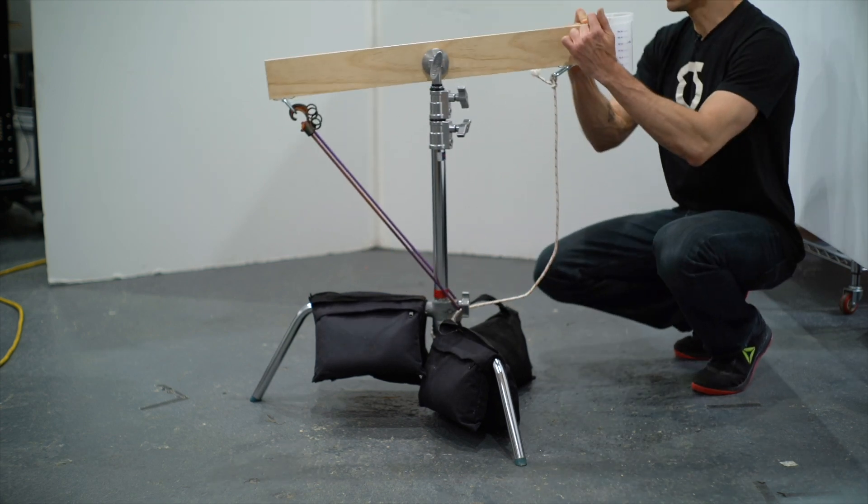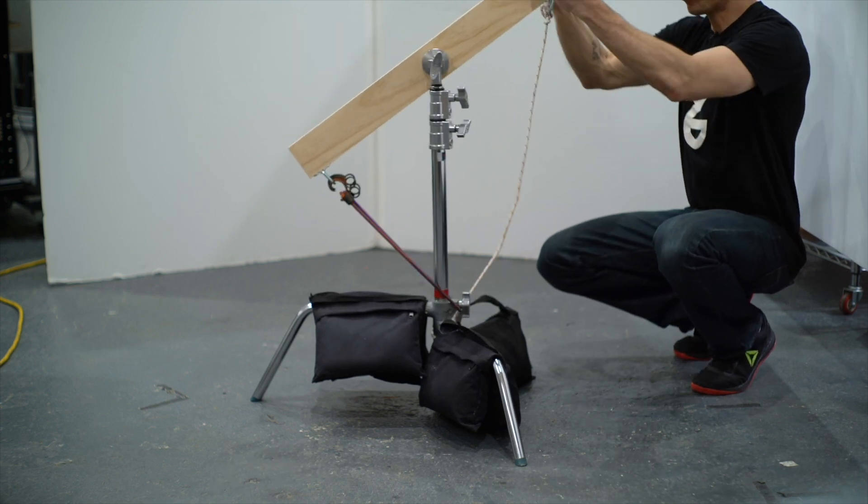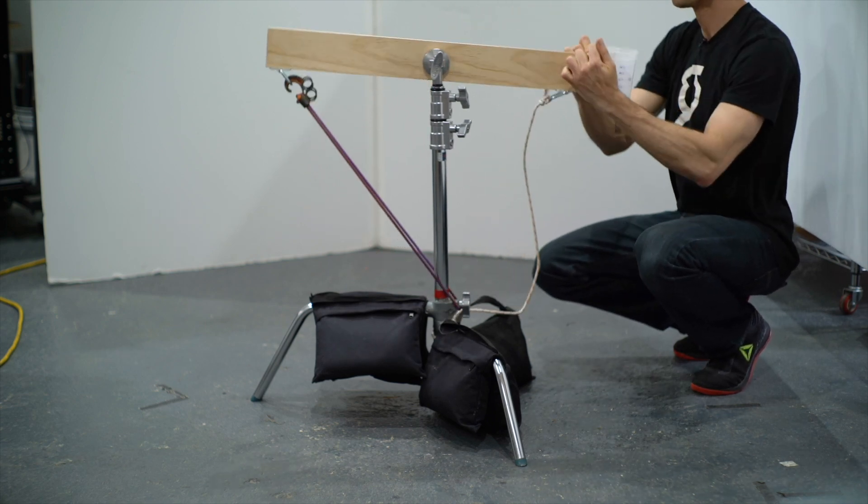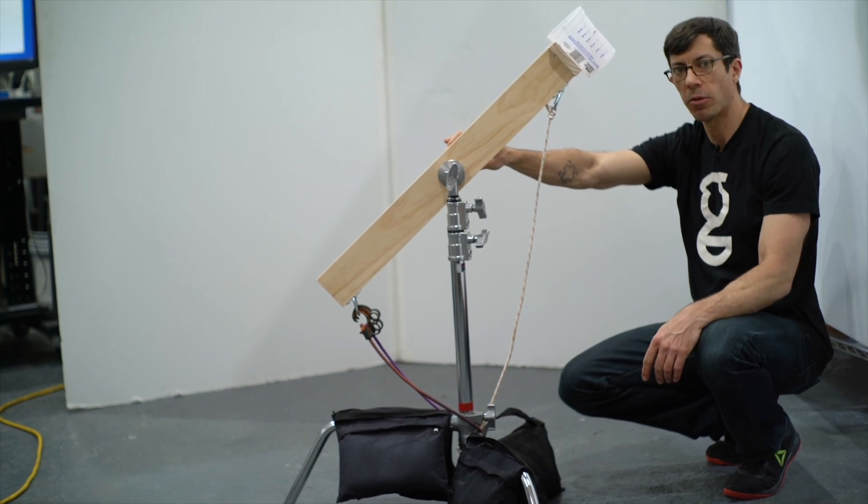It's important to note that in order to get the rig working consistently, you need to set it up the same way every time. So fill the container with the same amount of liquid and pull the catapult arm back to the same spot every time. This consistency is very important in creating reliable results.